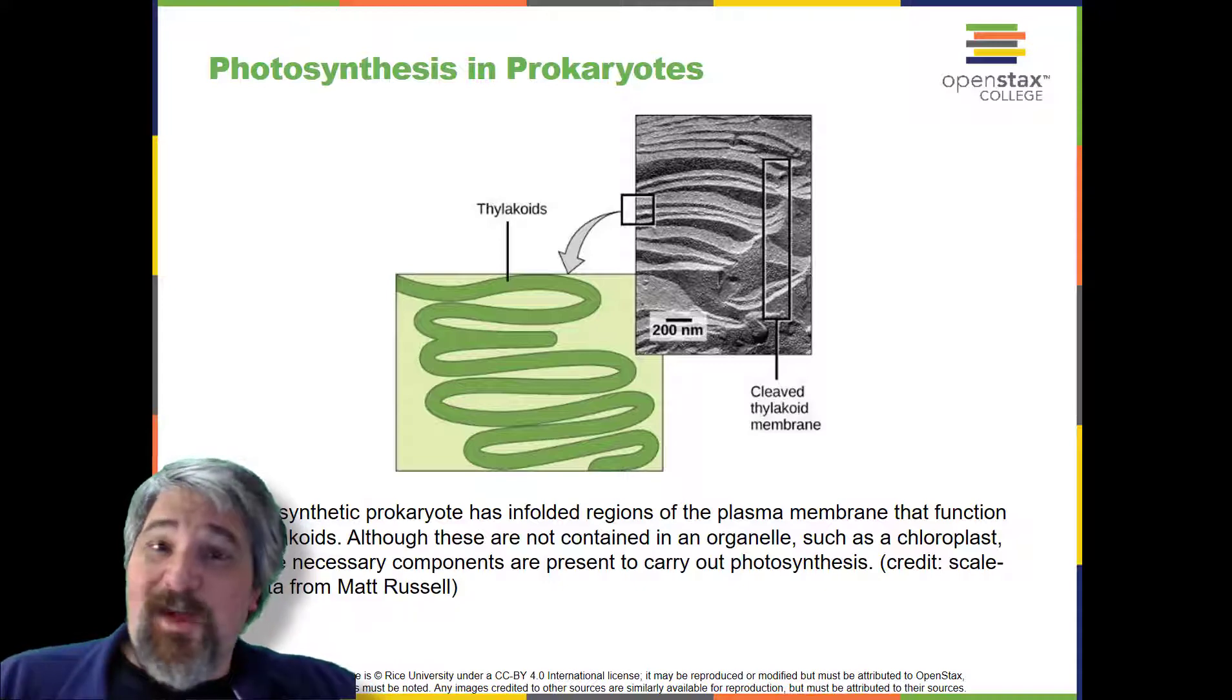Prokaryotic photosynthetic autotrophic organisms have enfoldings in their plasma membrane for chlorophyll attachment and photosynthesis. It is here that organisms like cyanobacteria can carry out photosynthesis.